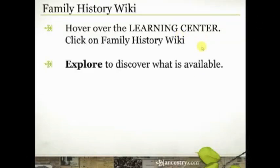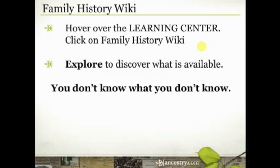One of the first things you're going to want to do is just explore to discover what's available. There's a basic principle that we sometimes forget: you don't know what you don't know. We oftentimes approach research based on the information we do know. But because there are things we don't know, it never occurs to us to look for our family in a certain record or to research in a certain way. The Family History Wiki gives you an opportunity to explore and learn new things along the way.